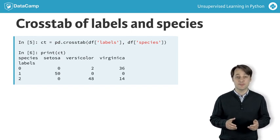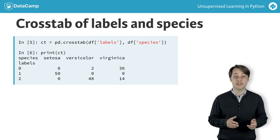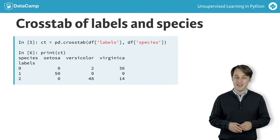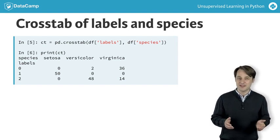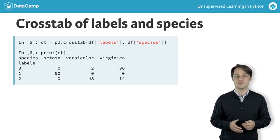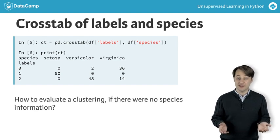Cross-tabulations like these provide great insights into which sort of samples are in which cluster. But in most datasets, the samples are not labelled by species. How can the quality of a clustering be evaluated in these cases?